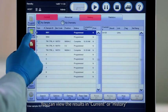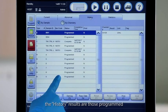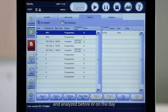You can view the results in current or history. The current includes those that are programmed and analyzed on the day. The history results are those programmed and analyzed before or on the day.